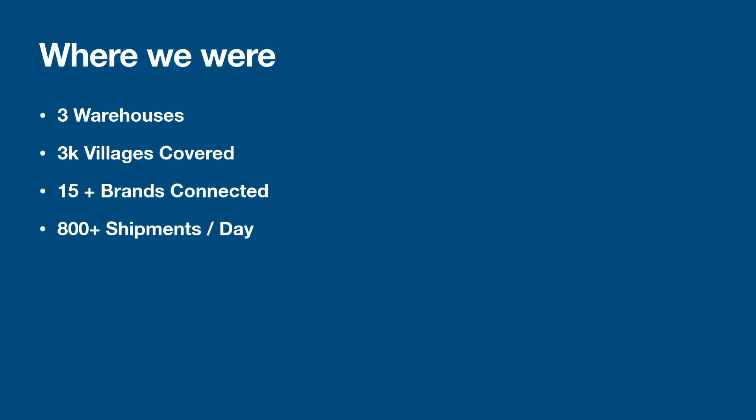On this architecture, we were at three warehouses, covered almost 3K villages mostly in Maharashtra, and were connected to 15 different brands in the FMCG domain. Popular brands like Nestlé, Parle, and ITC were connected with us. We were delivering around 800 shipments per day, and that was a fine load for the monolith system.